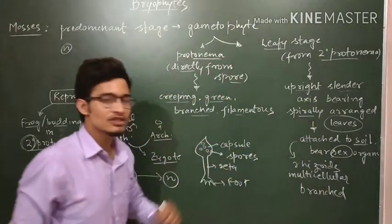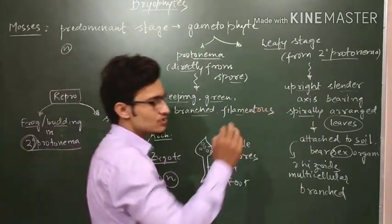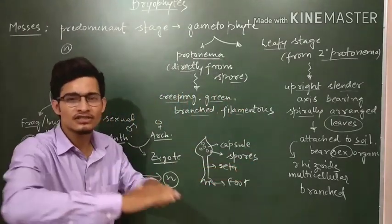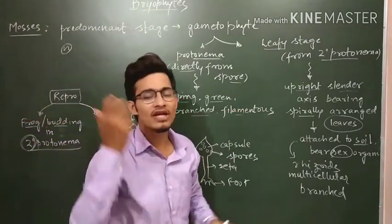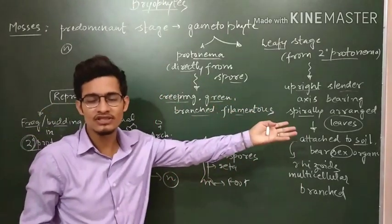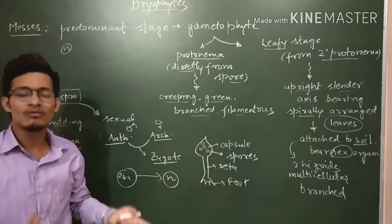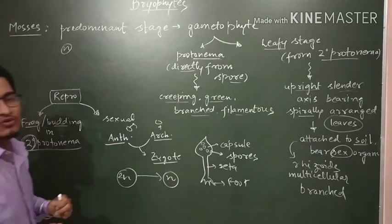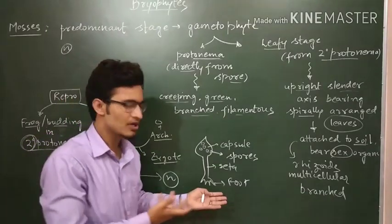The important points in this lecture are to differentiate between the two stages. The protonema is small, creeping and green. The leafy stage has a stem-like upright structure with leaves and sex organs. Sex organs are present in the leafy stage because protonema only shows vegetative reproduction. This is similar to what we looked at in liverworts.